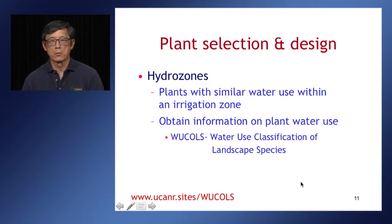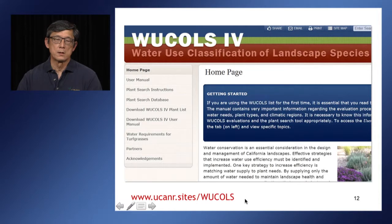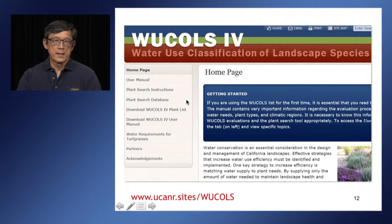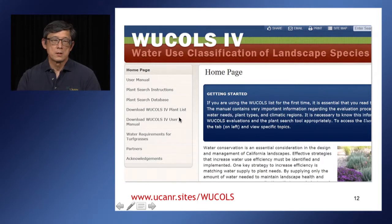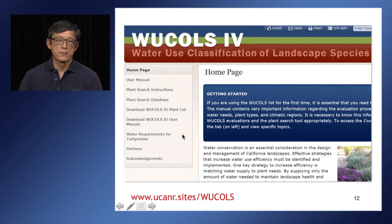Where do we get information on plant water use? There's a document called WUCOLS — Water Use Classification of Landscape Species. The website contains a user's manual, how to search the database, the plant database itself, which you can download in part or entirely, and also information specific for turf grasses. We can go to this webpage, look for plants you're interested in including in your landscape, and identify which ones fall into different water use classifications.